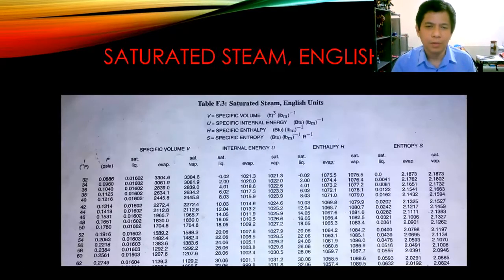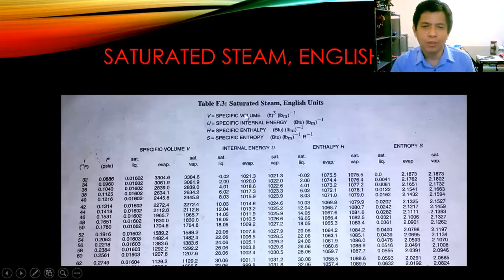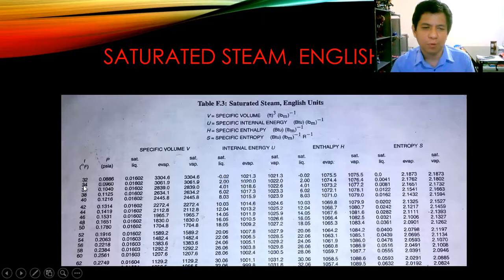The third part of the steam table has the saturated steam in English units. For example, if you are given degrees Fahrenheit — exact degrees Fahrenheit — it is easier to use this part of the steam table to determine the specific volume.